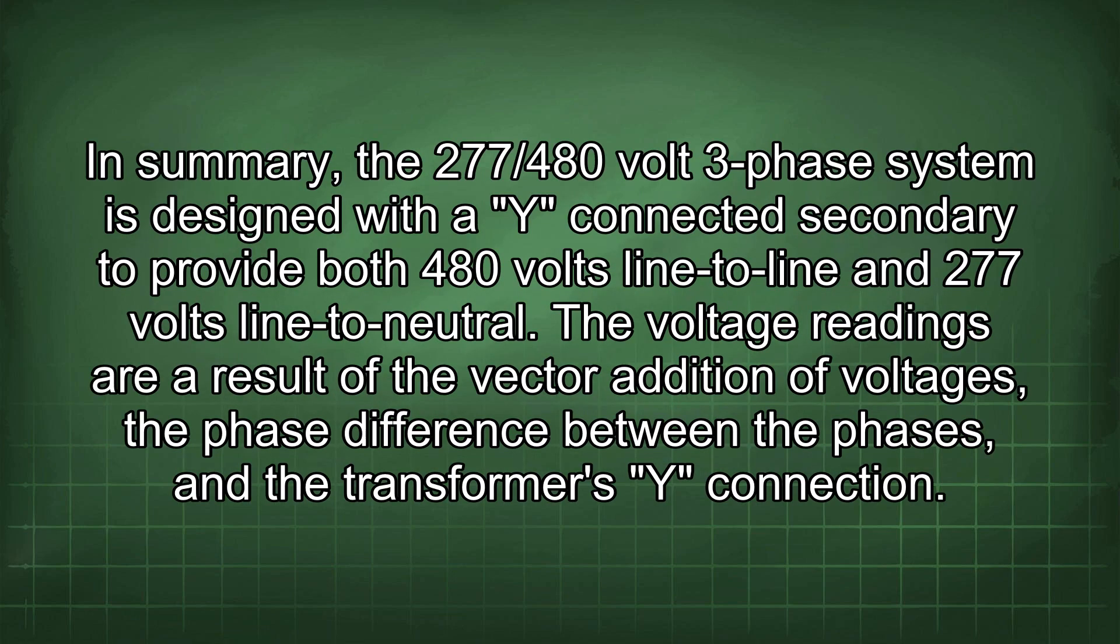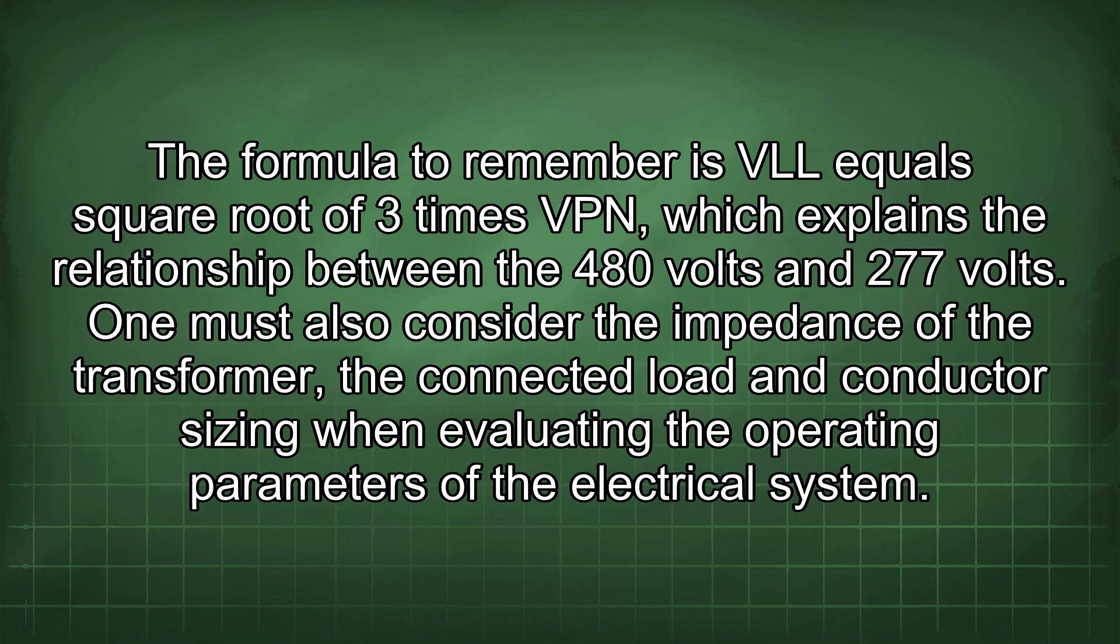In summary, the 277/480 volt 3-phase system is designed with a Y-connected secondary to provide both 480 volts line-to-line and 277 volts line-to-neutral. The voltage readings are a result of the vector addition of voltages, the phase difference between the phases, and the transformer's Y connection. The formula to remember is VLL = √3 × VPN, which explains the relationship between the 480 volts and 277 volts.